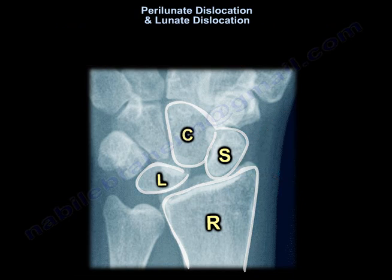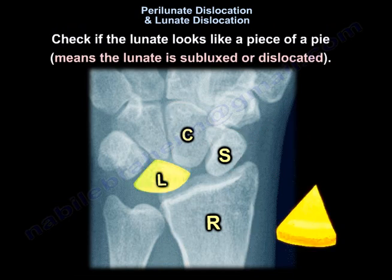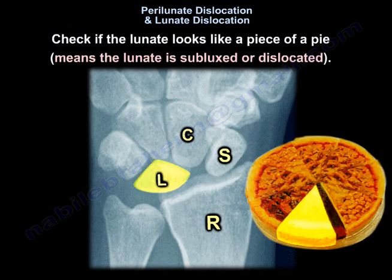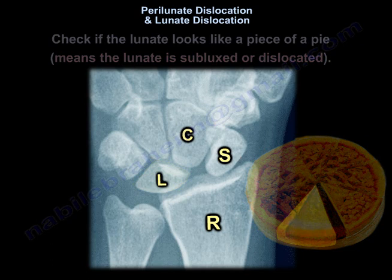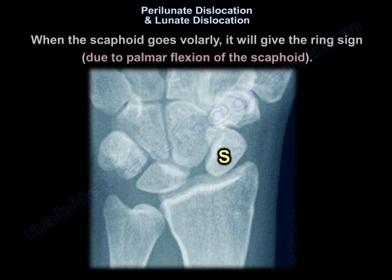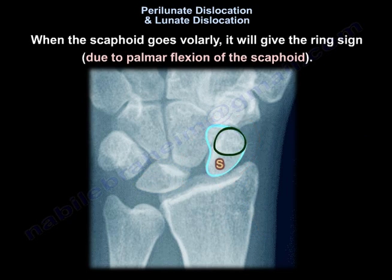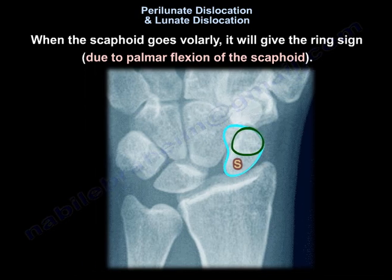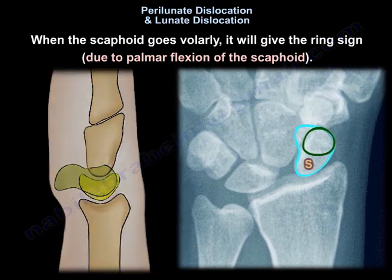Check if the lunate looks like a piece of pie — triangular in shape. That means it's subluxed or dislocated. When the scaphoid goes volarly, it will give the ring sign due to palmar flexion of the scaphoid.